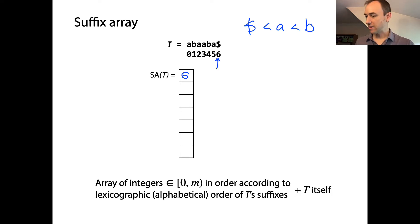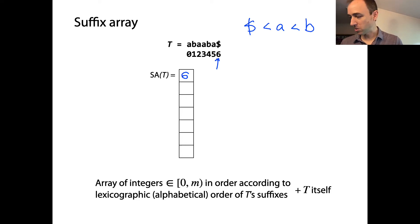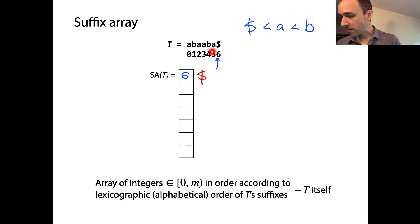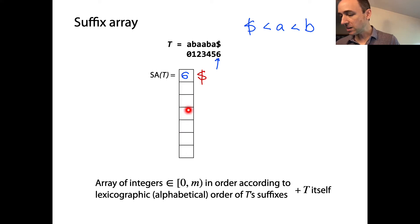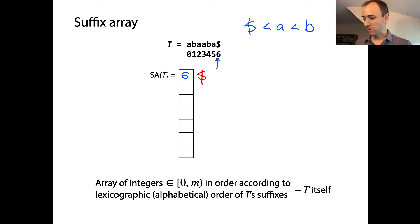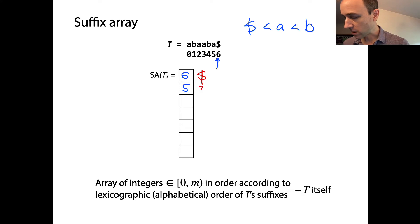Let's find the next largest suffix in alphabetical order. The first was the suffix dollar sign. The next one is going to be the one at offset five, which is 'a' followed by dollar sign. We've already got the suffix that starts with dollar sign, so the next suffixes we put in, to keep alphabetical order, are the ones that start with 'a', and the first among those are the ones that have dollar sign right after the 'a'. So I'll put a five here, corresponding to 'a$'.